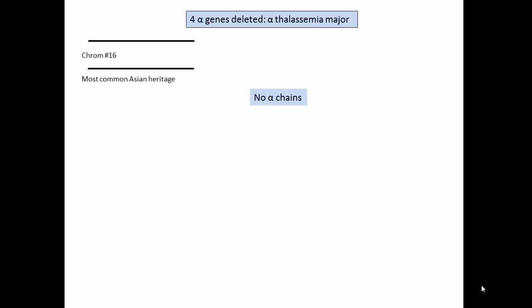When all four alpha genes are deleted, this is alpha thalassemia major. It is most commonly found in families of Asian heritage. No alpha chains are produced.